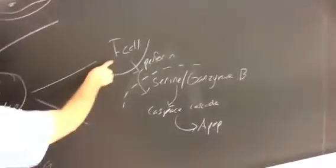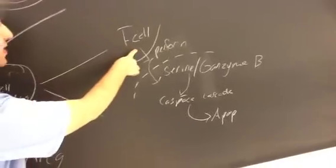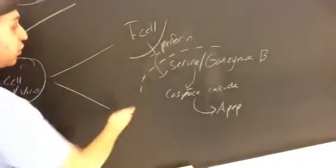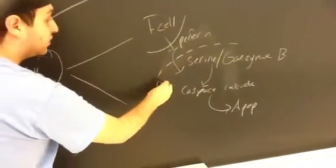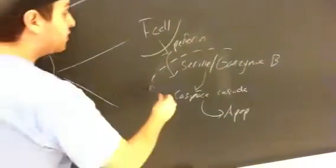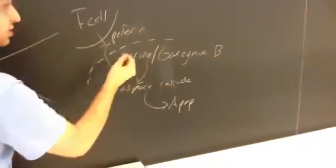The other method it can do without the receptor is the T-cell can release an enzyme called perforin, which actually opens up pores inside of the cell, creating these spaces. And then in those spaces, it can release serine...